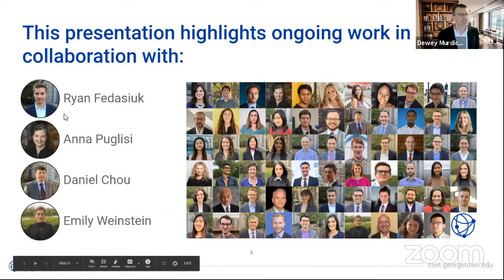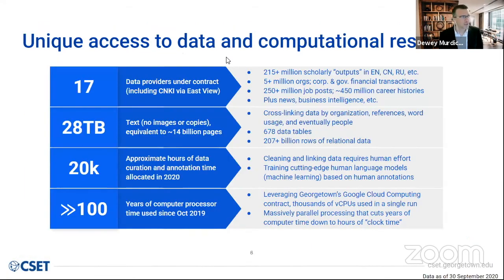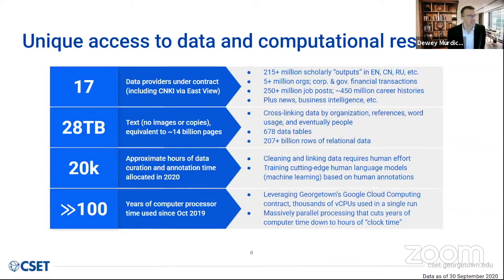The work I'm going to highlight today had four significant contributors: Ryan, Anna, Daniel, and Emily. CSET is here to help do data-driven, data-informed analysis, which means we actually have to have a lot of data. We have about 17 data providers under contract, including CNKI from Eastview. This is really important data to be able to understand what's happening in emerging technologies. We have about 215 million scholarly outputs, including papers and review articles, in English, Chinese, and Russian.